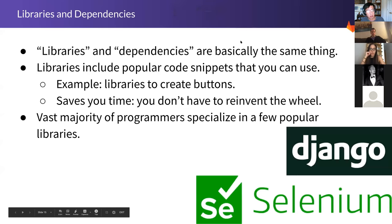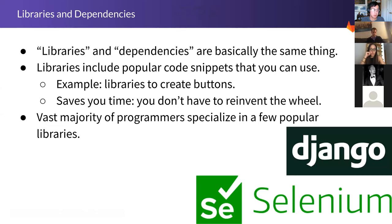Now that we understand programming languages, let's talk about libraries and dependencies — a term we hear from time to time. GitLab actually houses dependencies; it's part of our value proposition. Libraries and dependencies are fundamentally prepackaged chunks of code that you can use. A lot of developers are doing the same things over and over — creating a single button on a website is probably around 100 lines of code, and buttons are pretty interchangeable, so you'd want to copy and paste that chunk of code.